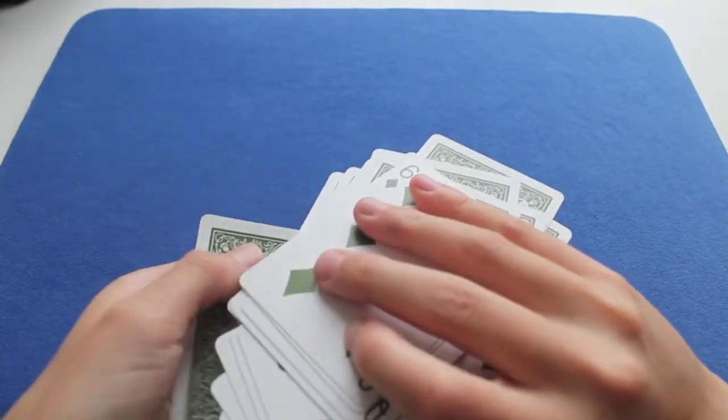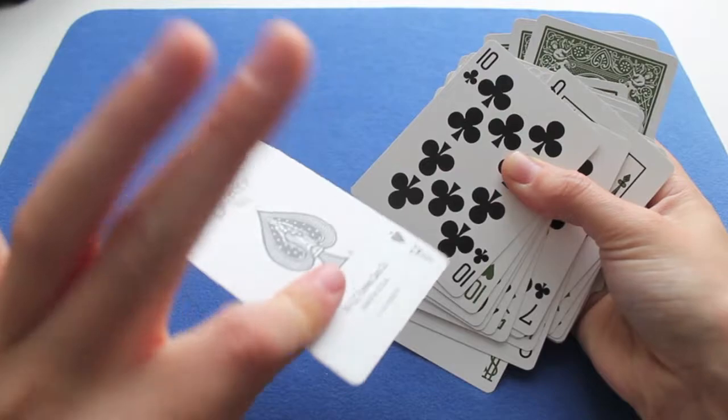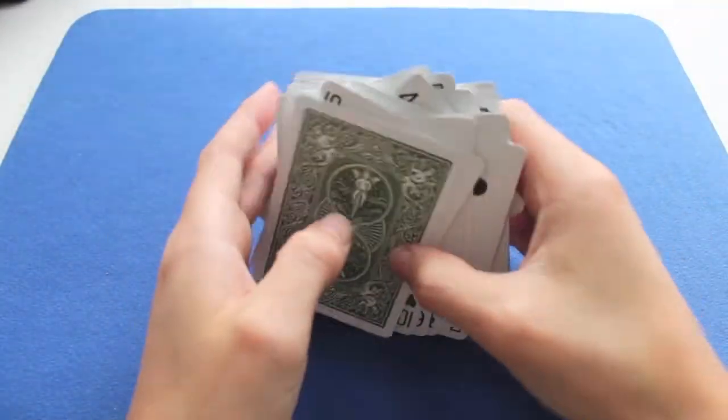Which is the Ace of Spades. Then you flip all the big deck in your right hand over, and you put the bottom card—the Ace of Spades—on the top, like this.